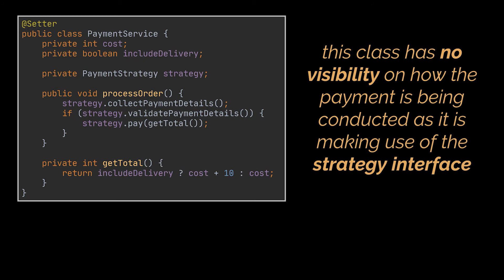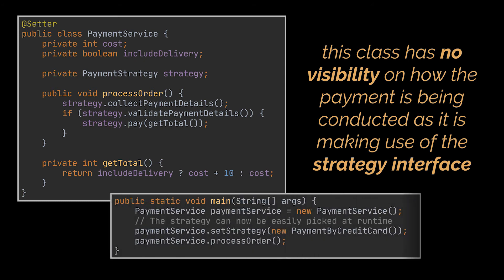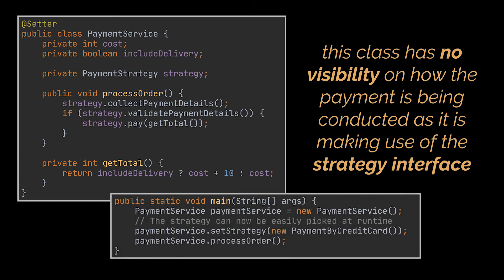Now if a client wants to make use of the code we wrote, all he has to do is define the strategy he wants to use and pass it to the service. Notice also how the strategy is now easily replaceable at runtime.